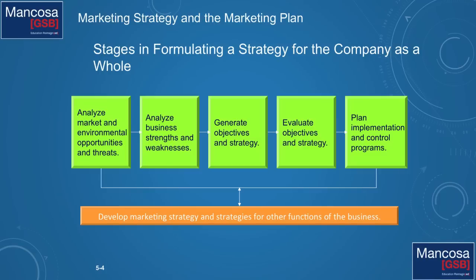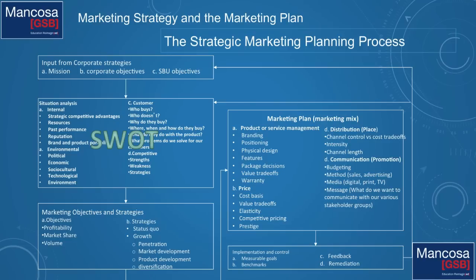Once you've done that, you develop the marketing strategy and strategies for the other functions in the business. My next video is going to be about how all this is integrated in order to be effective. So let's look in detail at the strategic marketing planning process. Firstly, you've got input from your corporate strategies — mission, corporate objectives, strategic business unit objectives, etc.